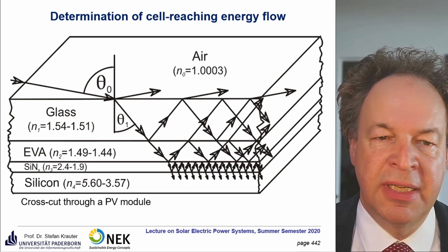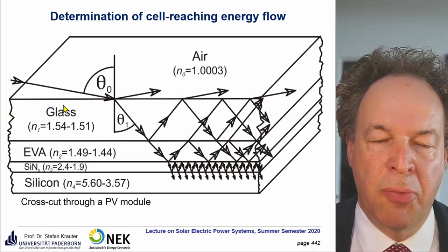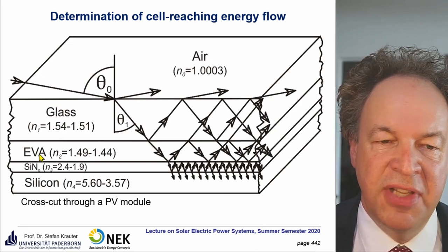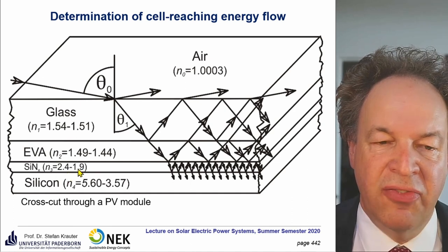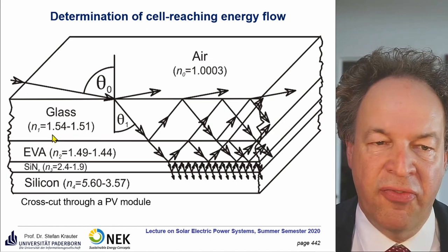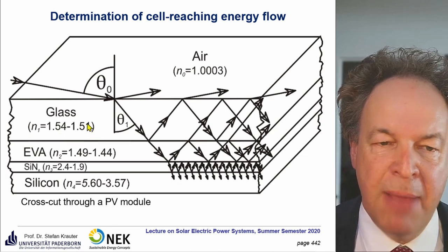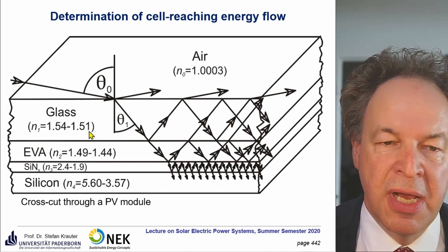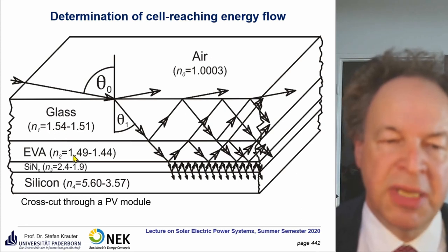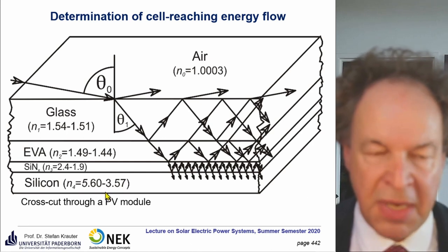Now we come to optical modeling. The solar module composition has on top a glass sheet, then EVA, then silicon nitride as an anti-reflective layer, and then silicon solar cells. N represents the optical refractive index. For glass we have 1.54 to 1.51 depending on type and wavelength — this is called dispersion. For glass dispersion is not very big, but for EVA, silicon nitride, and especially silicon, dispersion is rather large with a big deviation in refractive index depending on wavelength. This was considered in the modeling.